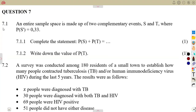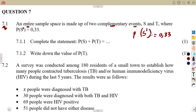On question number 7, we are given question 7.1: an entire sample space is made up of two complementary events, S and T, where the probability of S complement — as you can see, this part represents S complement. The probability of what is not in S is given as 0.33, meaning this represents what is not part of S. Remember, they are complementary events.